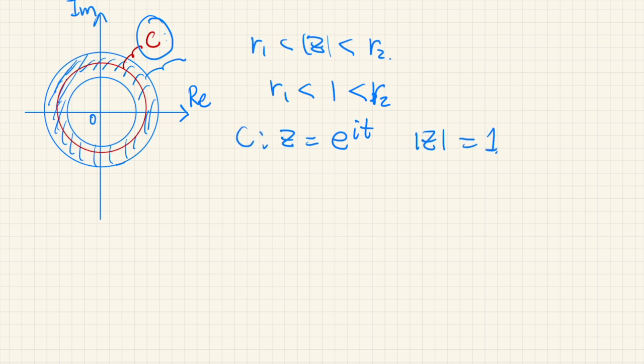Now, along this path, let's calculate the Laurent coefficient of a function. So cn is 1 over 2 pi i, and the integral around this circle f of z times z to the power of negative n negative 1, dz. But now we integrate along this path.